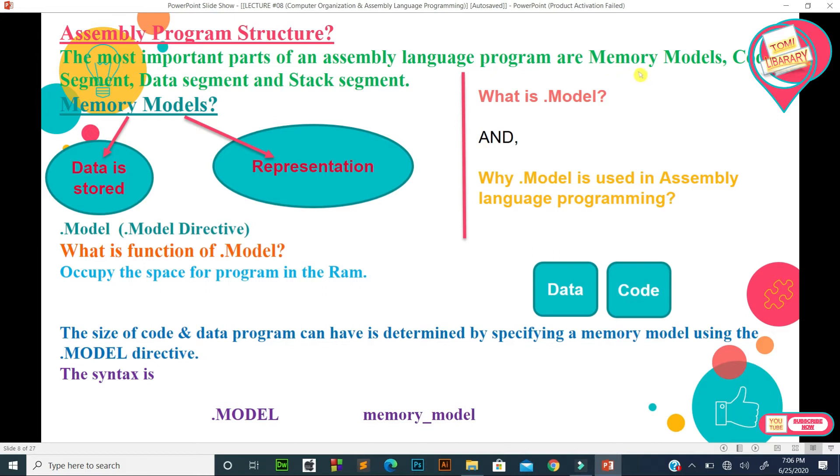The remaining part in assembly language program structure is memory models. Memory means data is stored. So what is .MODEL and why .MODEL is used in assembly language programming? When we create a program and write coding, initially we use .MODEL. This is called .MODEL directive.